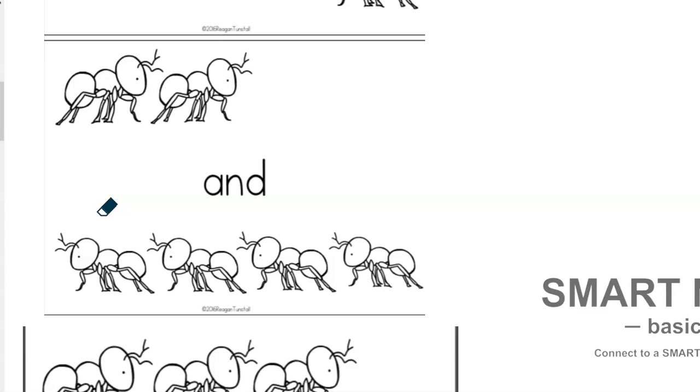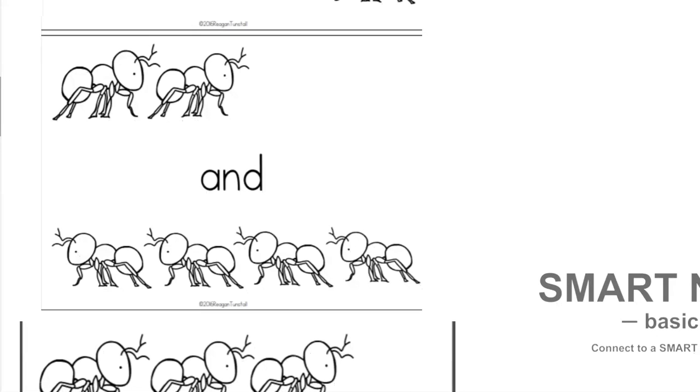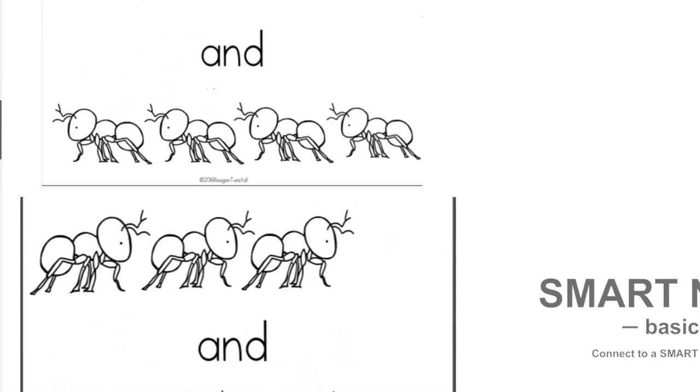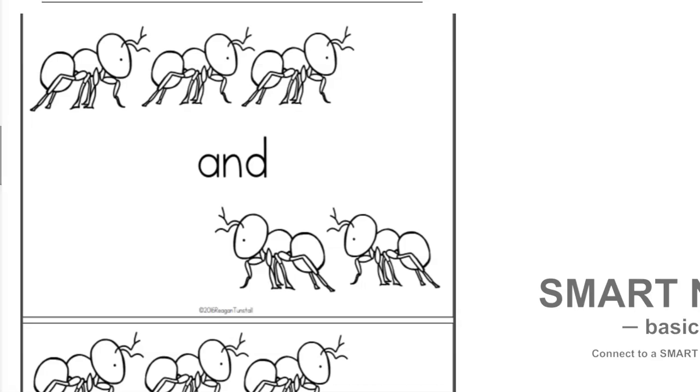All right Deleza, how many ants do I have right here? Three. And how many ants do I have right here? Two. So three and two make what, Deleza? Five. Good job, three and two make five.